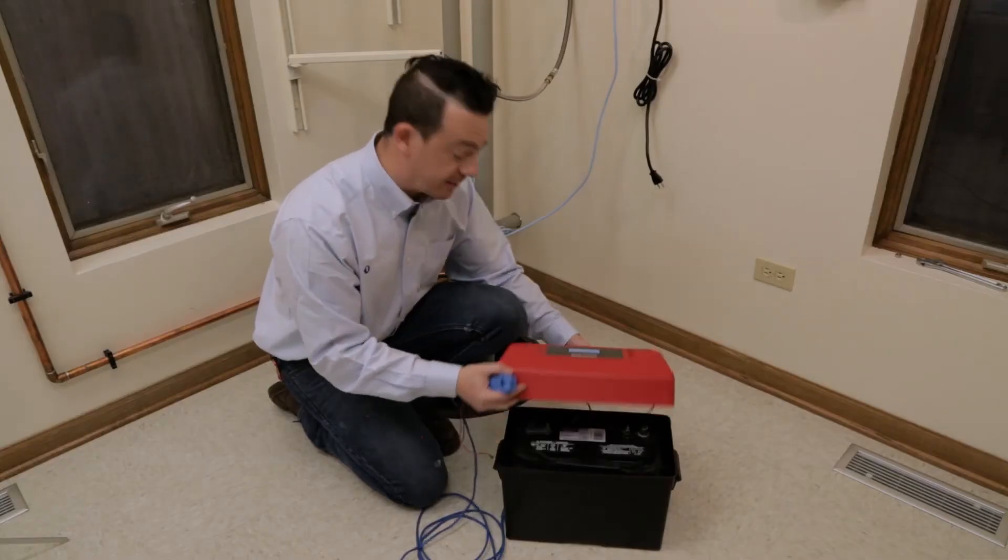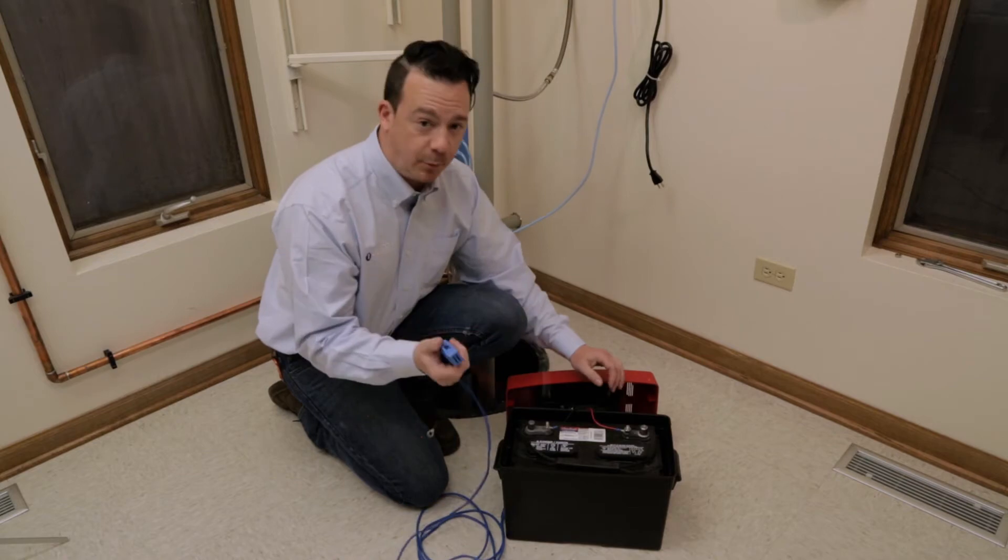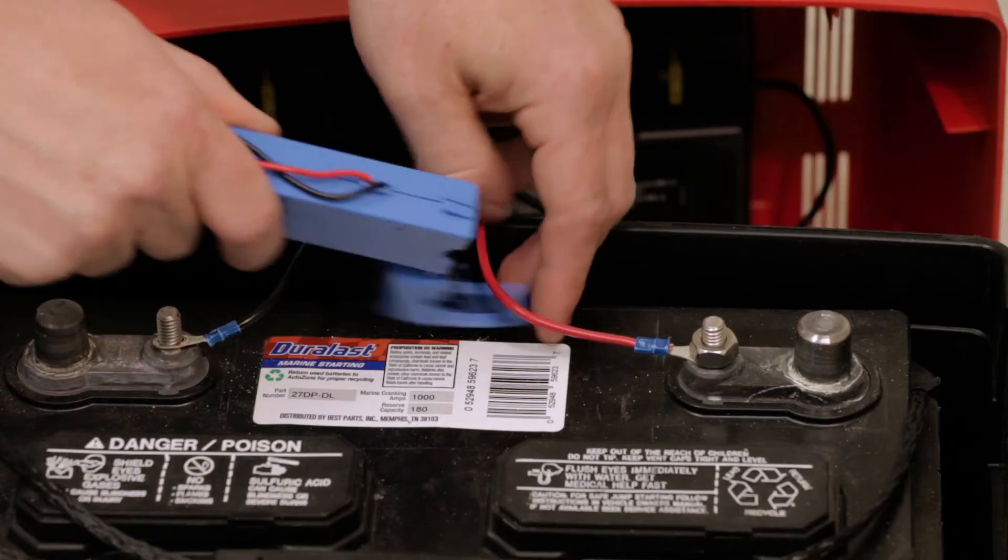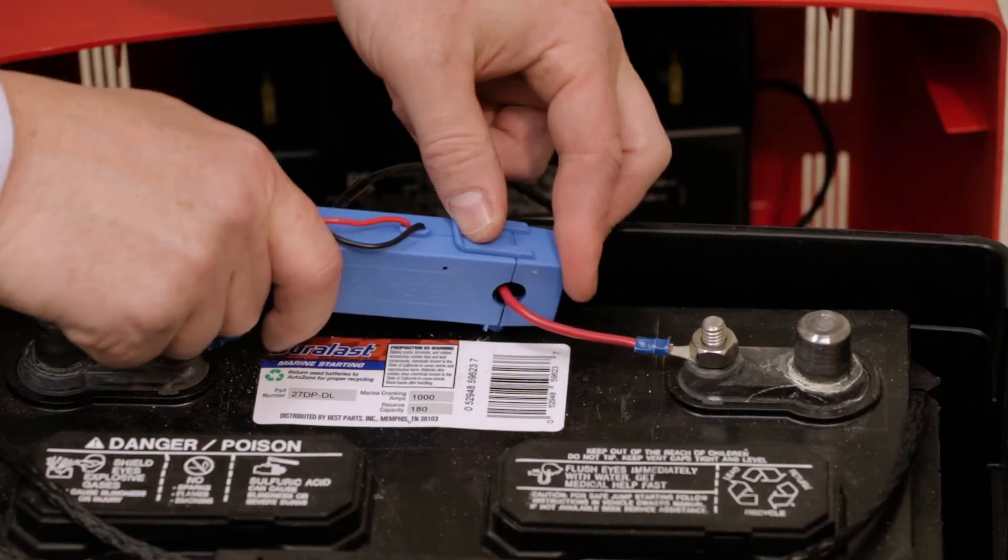Next, if your installation includes a battery backup pump, simply clamp the current sensor around one of the cables leading to or from the battery inside the battery compartment. In some installations, the backup battery will be indirectly connected to the DC backup pump through a separate charger module. In these installations, clamp the current sensor to the wire connecting the battery to the charger module.